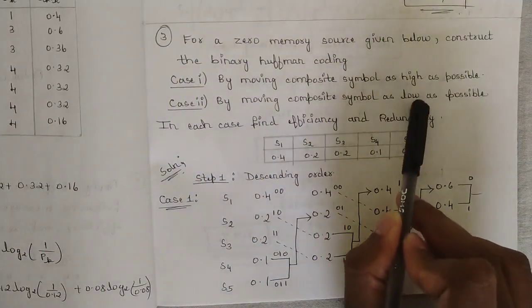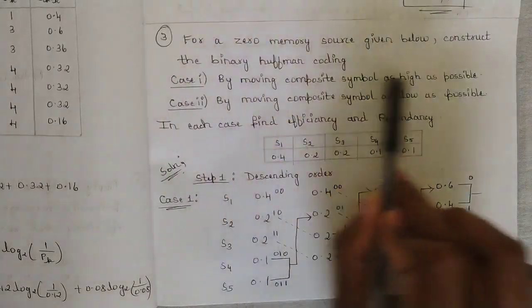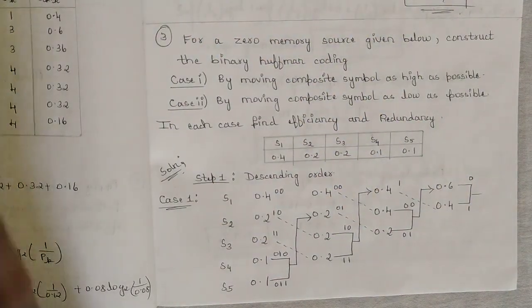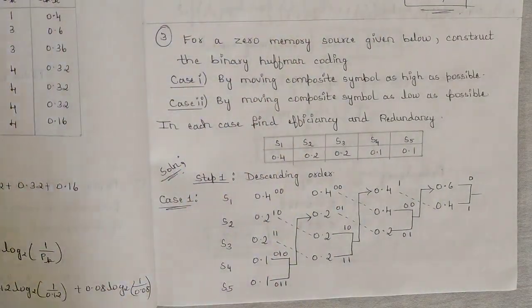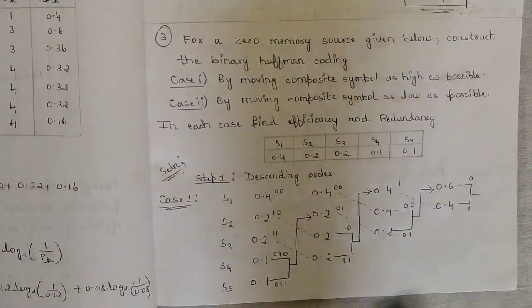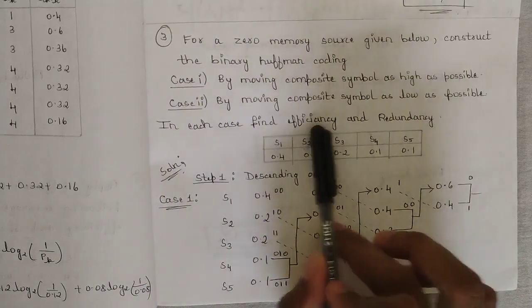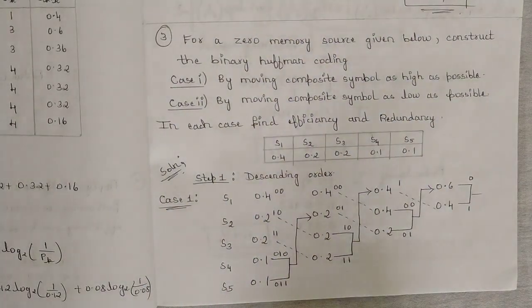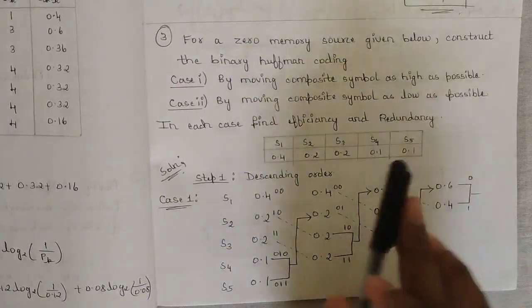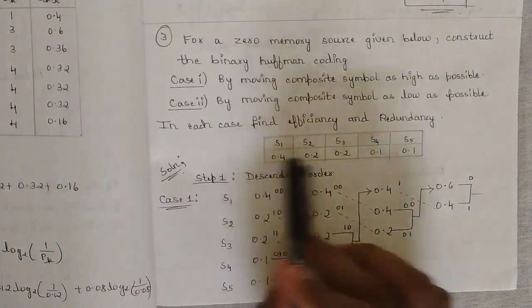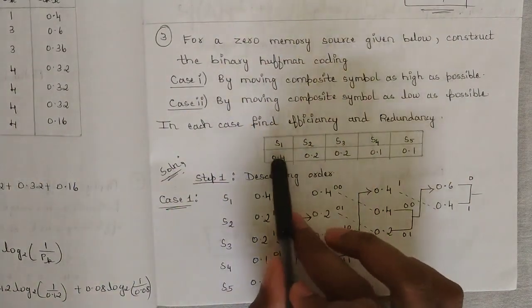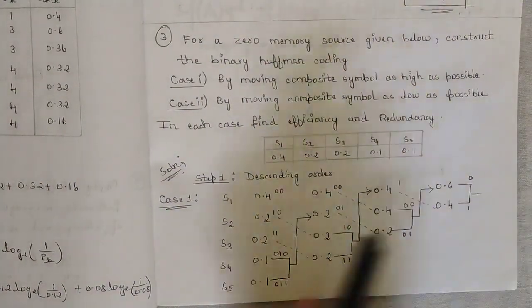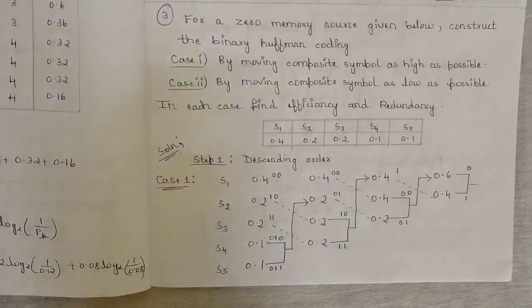Case one is the same as whatever we have solved previously, but case two is different — we will get the Huffman coding structure in a different way. In each case, find the efficiency and redundancy. The table gives five symbols with five different probabilities already in descending order: 0.4, 0.2, 0.2, 0.1, 0.1.